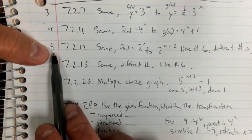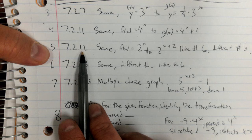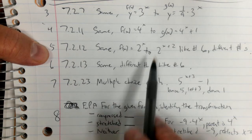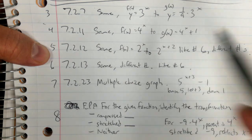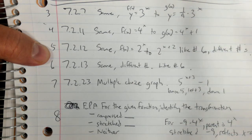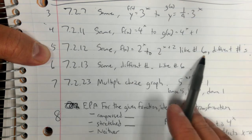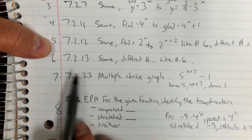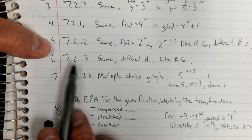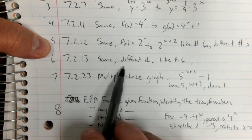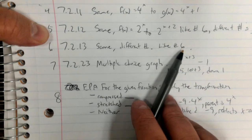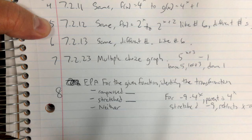Now on number 5, which is 7.2.12, on mine it was the exact same numbers as 6, but all you do is graph it, you don't have to do this domain range and other questions. On number 6, it's 7.2.13, again you do the same thing like number 6, where you do have to answer all your questions.